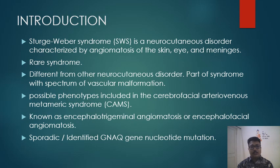Usually it is a sporadic syndrome, but a nucleotide mutation has been identified in the GNAQ gene on chromosome 9. It is also a phenotype included in the cerebrofacial arteriovenous metameric syndrome, also known as CAMS. It is also known by the names encephalotrigeminal angiomatosis or encephalofacial angiomatosis.